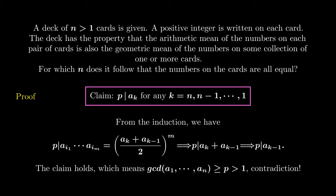And obviously, this is not going to hold, because we have assumed that all the ak has the greatest common divisor one. So, this is a contradiction. Therefore, for any n, it holds that the numbers on the cards must be equal.